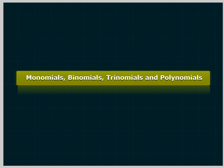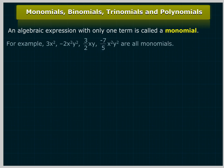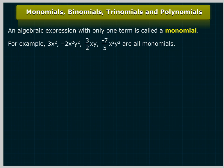Monomials, Binomials, Trinomials and Polynomials. An algebraic expression with only one term is called a monomial. For example, 3x², -2x²y², (3/2)xy, and -(7/5)x²y² are all monomials.